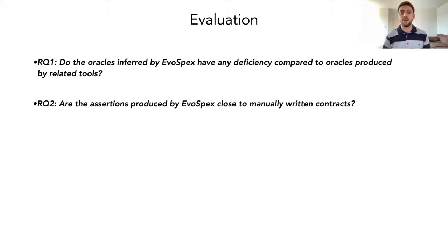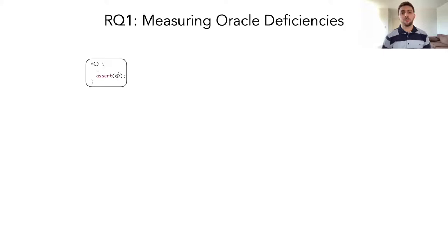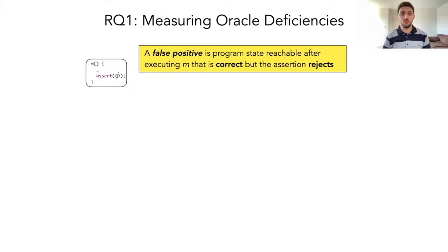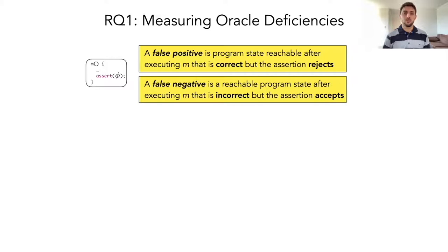In the first case, we need to define what are oracle deficiencies. For a post-condition, an oracle deficiency may be a false positive, that is a program state reachable after executing the method that is correct but the assertion rejects. Or it may be a false negative, that is a reachable program state after executing the method that is incorrect but the assertion accepts.